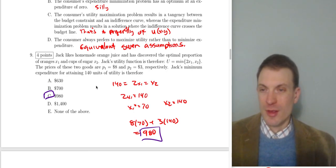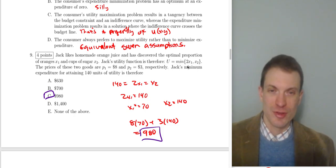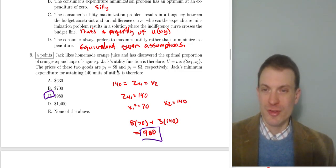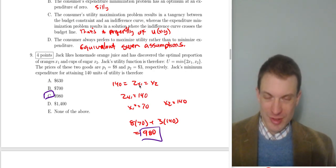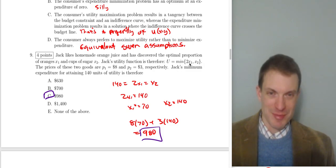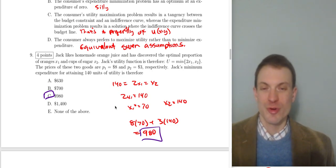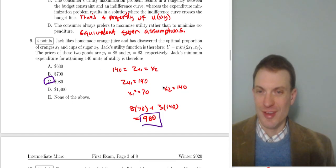Question eight: Jack's utility function for orange juice is U = min(2x₁, x₂), with prices p₁ = 8 and p₂ = 3. To attain utility of 140, set 2x₁ = x₂ = 140, giving x₁ = 70 and x₂ = 140. Utility = min(2×70, 140) = min(140, 140) = 140. Expenditure = 8×70 + 3×140 = 560 + 420 = 980. The consumer's expenditure minimization problem looks a lot like the firm's cost minimization problem.